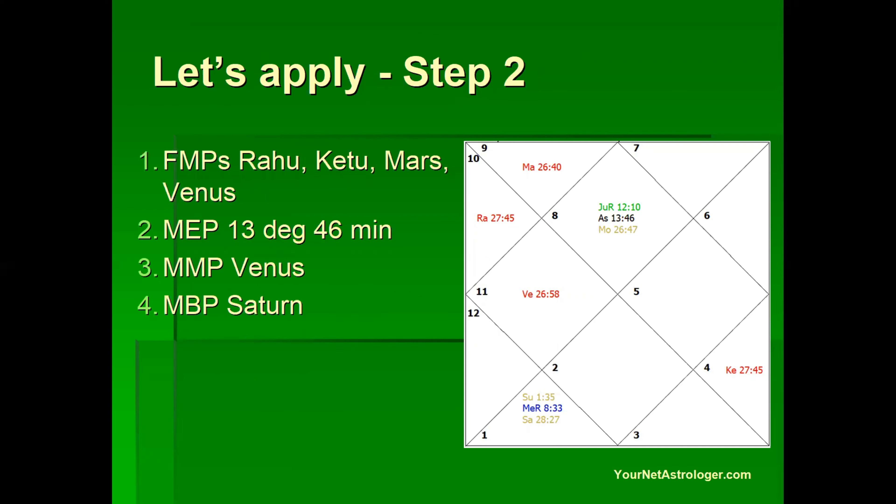Then in step two we identify the functional nature. Here the functional malefic planets are Rahu, Ketu, Mars and Venus and they are shown in red. Out of these Venus is the most malefic planet or MMP. Most benefic planet out of the functional benefics is planet Saturn as it is the lord of fourth house. Now what is the most effective point of the chart? This is very important as the MEP is 13 degrees 46 minutes so it becomes the MEP of all the houses of the chart.